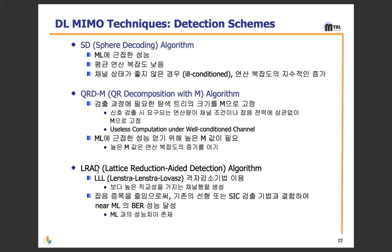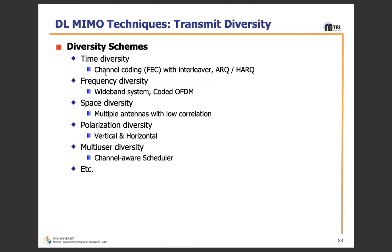There are several diversity schemes. Time diversity: multiple versions of the same signal are transmitted at different times, or alternatively, redundant Forward Error Correction (FEC) coding is added and the message is spread in time via bit interleaving before transmission. This avoids error bursts and simplifies error correction. ARQ (Automatic Repeat Request) or Hybrid ARQ is also related to FEC/channel coding.